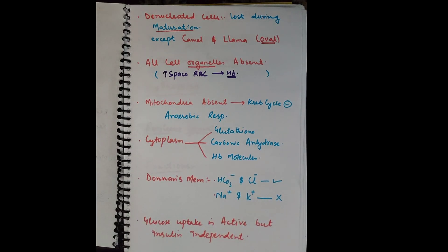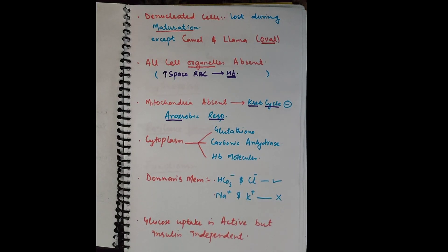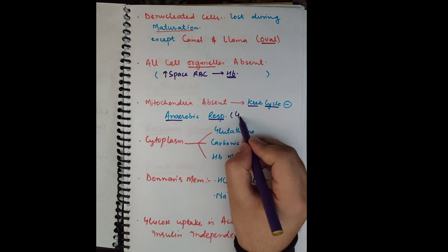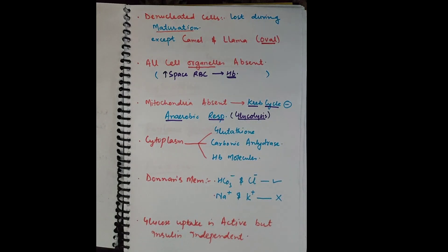Mitochondria is also absent in RBCs, so the RBC is not able to perform the Krebs cycle. RBCs depend on anaerobic respiration for their energy, specifically through glycolysis. All the enzymes required for glycolysis are present in the dissolved state in the cytoplasm, and the RBC utilizes those enzymes to carry out anaerobic respiration.